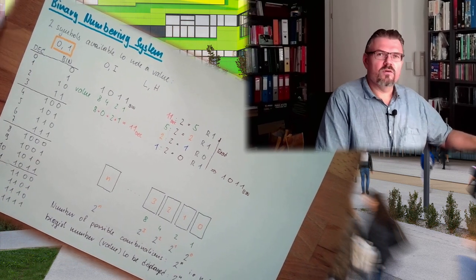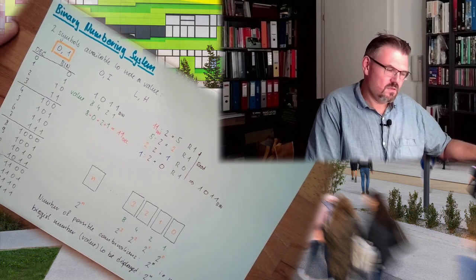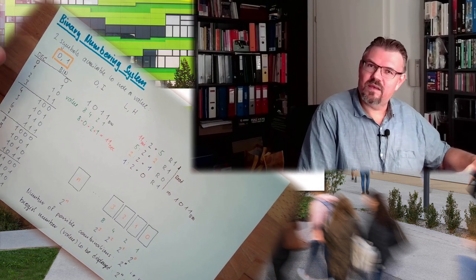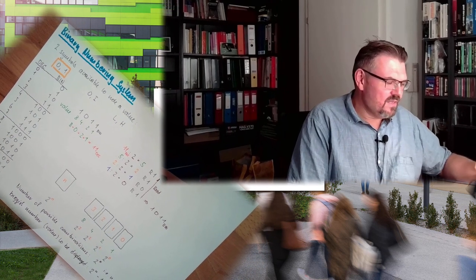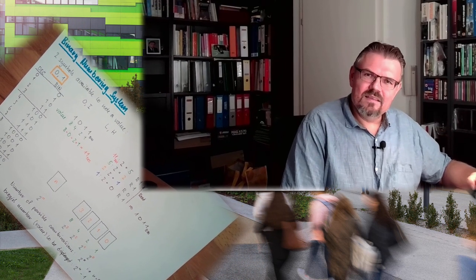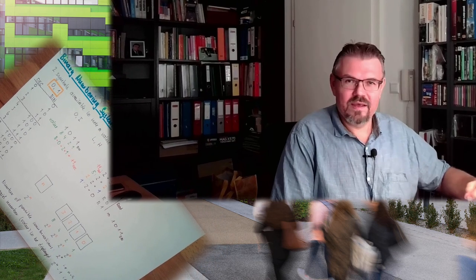Next time we are going to talk about the so-called hexadecimal system. This was the binary system, we are talking about the hexadecimal system. Because hexadecimal has 16 different possibilities, 16 different: hexa 6, decimal 10, 16 different symbols available. And what are the results? And how really close the binary system and the hexadecimal system are, I will show you in the next video. For this time, thank you very much for listening. Goodbye.